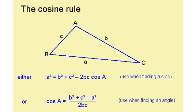The cosine rule looks like this, which you use when finding a side, and this will be given to you on the exam paper. For finding an angle, you can either rearrange this to get this here, or you can actually memorise it.